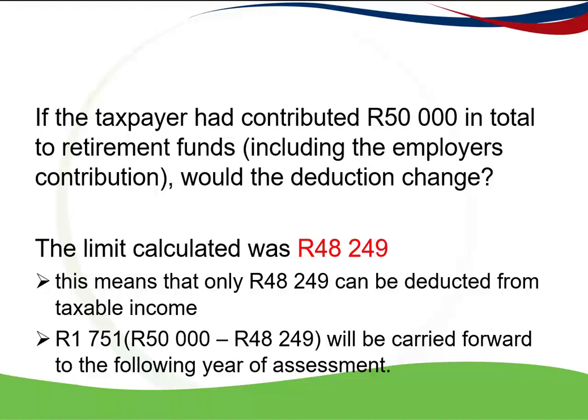The difference between the R50,000 contributed and the limit of R48,249 is R1,751. That amount will be carried over to the following year of assessment and added to contributions in that year. If you're doing a question where this applies, you need to indicate that amount and show that you know it will be carried forward.